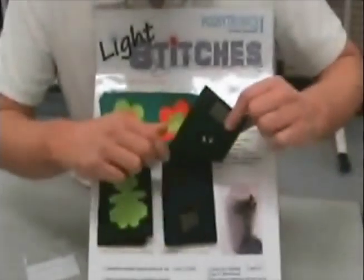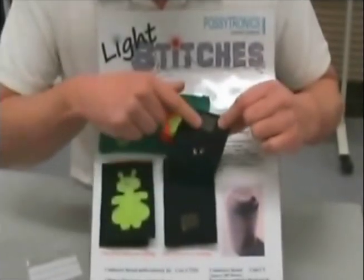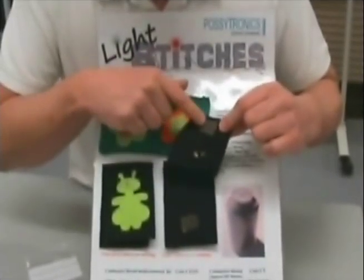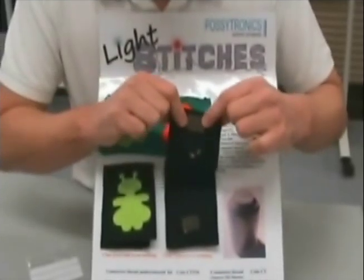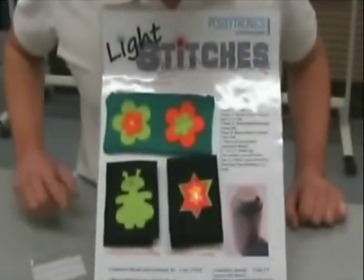Conductive Velcro can also be used as a switch in exactly the same way as the previous example, apart from the positive track is broken using conductive Velcro. So when the Velcro is placed together, the circuit is made.